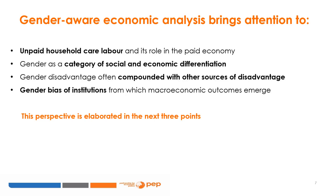It reminds us that it is important not to treat women and men as homogeneous categories. The fourth important insight is to make us see that macroeconomic outcomes emerge from institutions such as firms, government, households, and markets, all of which carry gender bias. These perspectives and economic thinking are further elaborated in the next few slides.